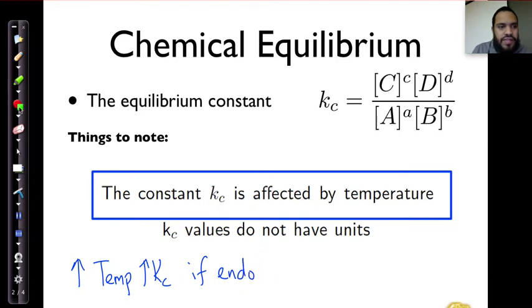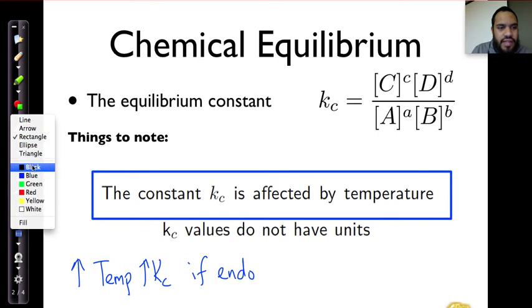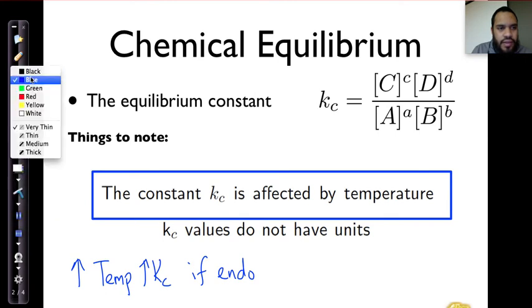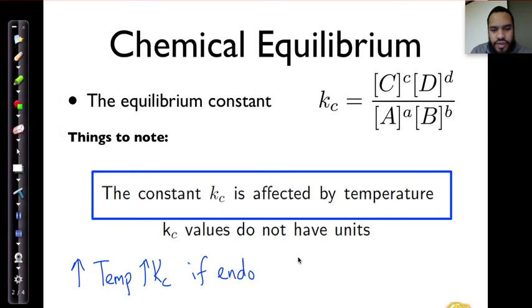And then I'm going to give you the contrary for that. I'm going to tell you a decrease in temperature - if you decrease the temperature, it will result in an increase in Kc if the reaction is exothermic. Okay? Let's just change that E.